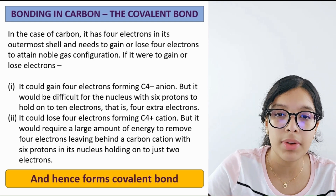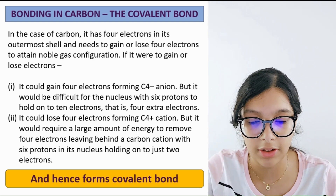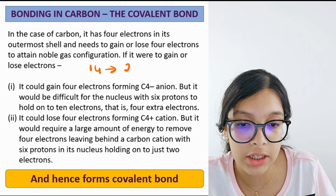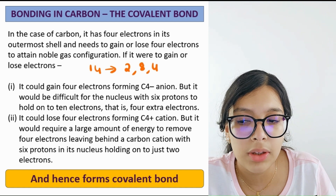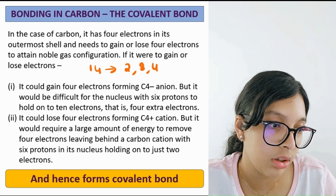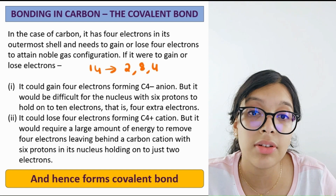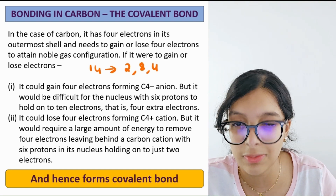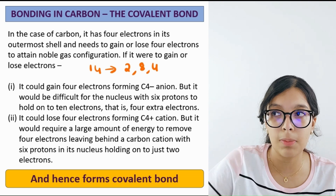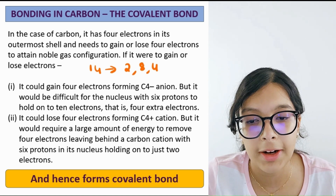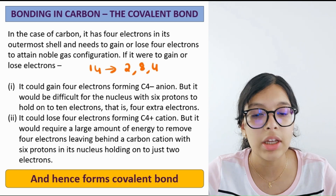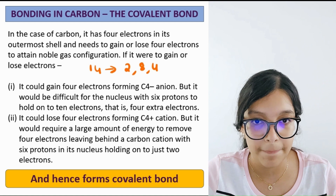Carbon has an atomic number of 6 and if you write the electronic configuration it is 2, 4. Now, can you imagine removing these four electrons in order to go for bonding, or gaining four electrons? Both tasks are very hard and would not take place. Instead, carbon shares electrons with hydrogen or other compounds — this process of sharing electrons to fill the valence shell and achieve octet is the covalent bond.